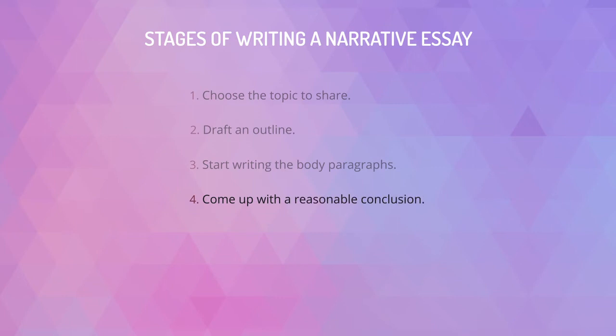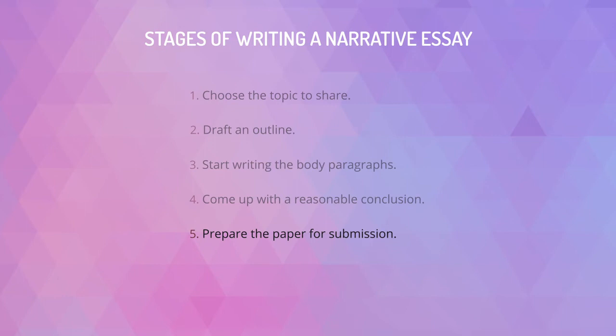Step 4: Come up with a reasonable conclusion. Craft a conclusion that will show your attitude toward the story. Express its significance and help the reader to learn something from your personal experience. This is the final stage of establishing close contact with your readers, which is why you should make it extraordinary and effective. Step 5: Prepare the paper for submission. After the last words are written, it is time for editing and checking your paper for grammatical and syntactical mistakes, as it does not really matter how unusual and attractive your story is if it contains a considerable number of mistakes.